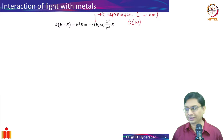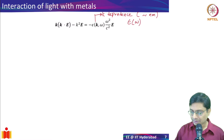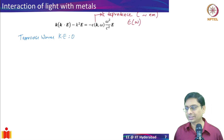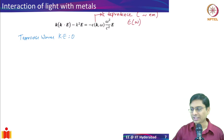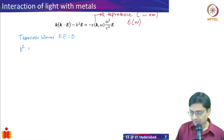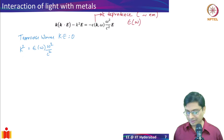This equation is valid. Now, to classify the various types of plasmonic resonances, we consider whether the wave is transverse or longitudinal. For a transverse wave, the electric field is perpendicular to the direction of propagation, so k dot E equals zero. When you have such a scenario, the dispersion relation simplifies to k squared equals epsilon of omega times omega squared over c squared. This is the generalized dispersion relation for a transverse wave.